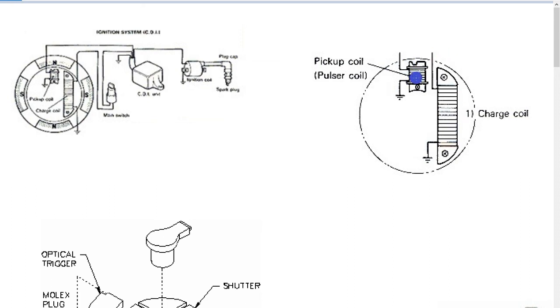And then we have a simple transistorized control where the pickup coil actually triggers the base of the transistor, and then that opens the circuit from the charged-up ignition coil. That's the charge coil that charges the primary of the ignition coil.